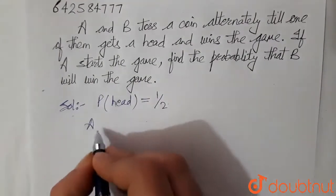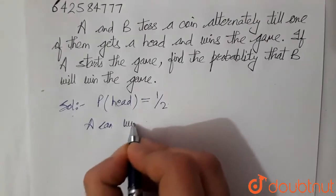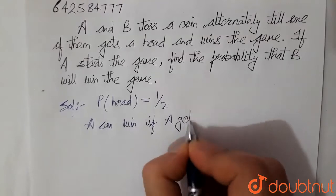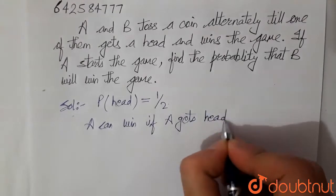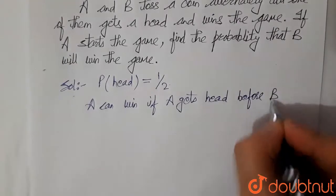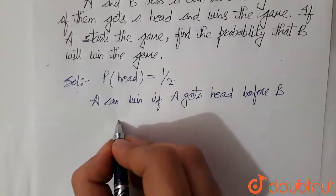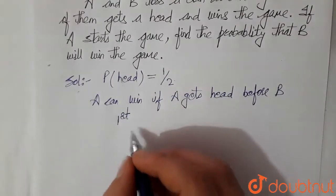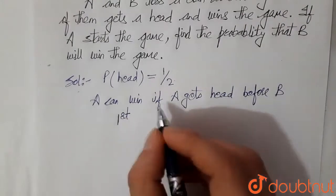So A can win if A gets head before B. Okay, so that can happen in first try also. In the very first try, A can get a head and win.